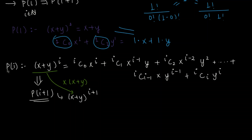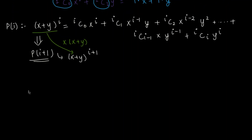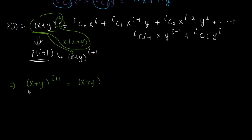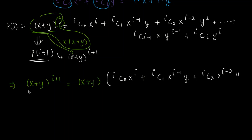Multiplying both sides by (x + y) is a mathematically sound technique. On the left-hand side, multiplying increments the power, giving (x + y)^(i+1). On the right-hand side, we have (x + y) times the full expansion: iC0 · x^i + iC1 · x^(i-1) · y + iC2 · x^(i-2) · y² + … + iCi · y^i.